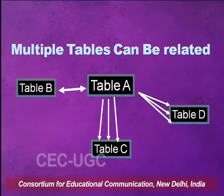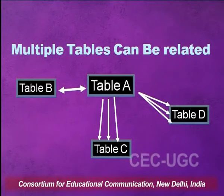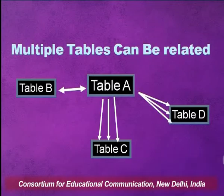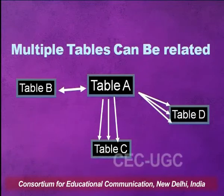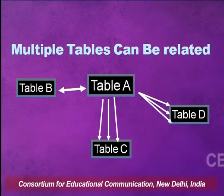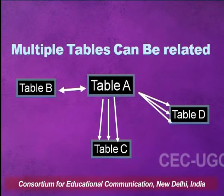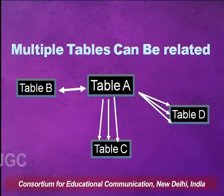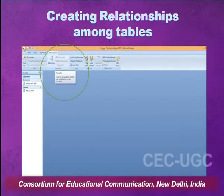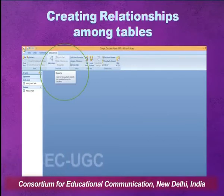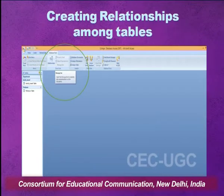There is another type of relationship known as many-to-many relationship. In a many-to-many relationship, multiple records from one table are related to more than one record in the other table, so relationships exist among multiple tables at the same time. When creating relationships in Access, one important thing is that when creating a relationship between a primary key and a foreign key, the relationship has to be a one-to-many relationship.